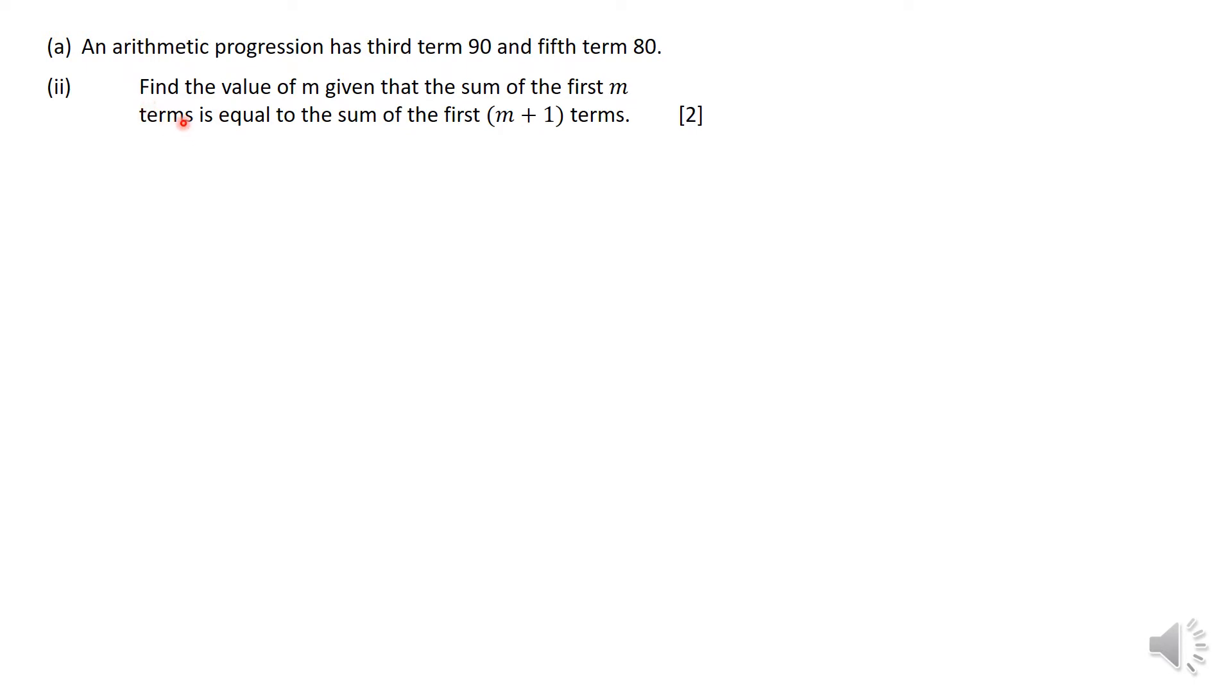Roman 2, same question, you are now supposed to find the value of M given that the sum of the first M terms is equal to the sum of the first M plus 1 terms. This is S sub N formula for an arithmetic progression.